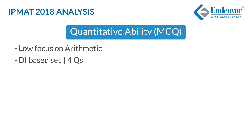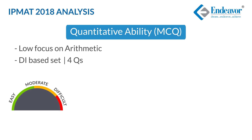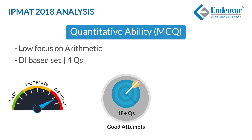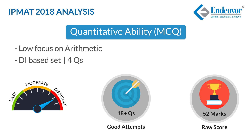Overall, the QA MCQ section can be considered tough as most calculations were lengthy and time consuming. In an ideal situation, 18 plus is a good attempt for this section, and a net correct of 13 plus, or a raw score of 52 plus, can be considered a good score.